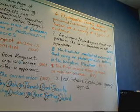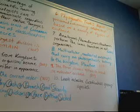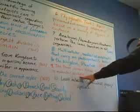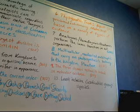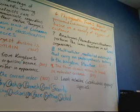And then number nine, the three domain systems is based on molecular evidence. Again, this has to do with how a scientist would, using observable data, categorize these kingdoms. And then ten, the least inclusive classification group is species.